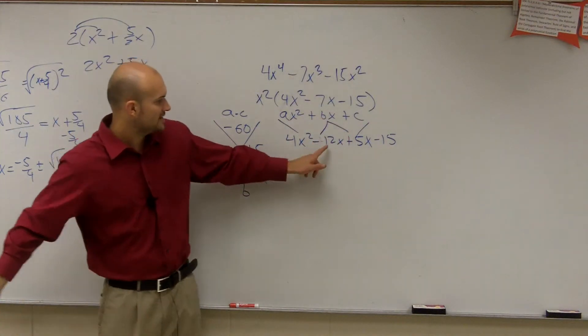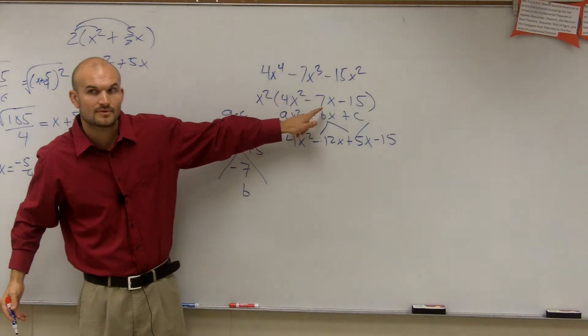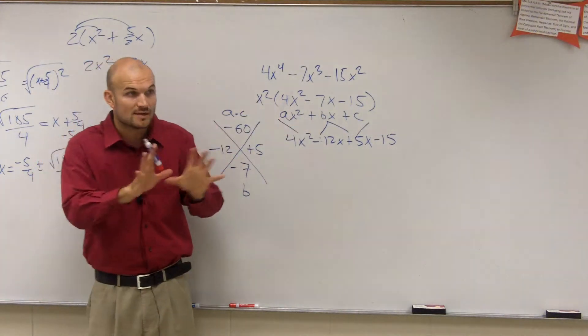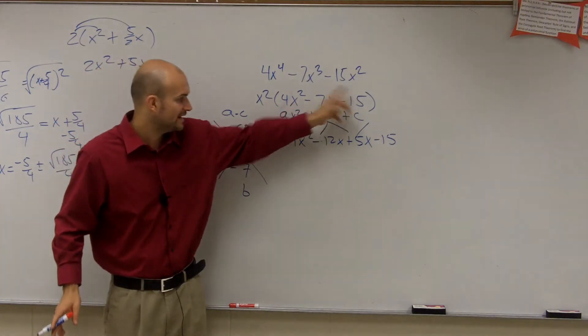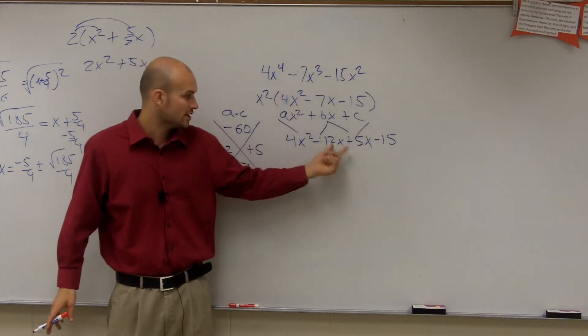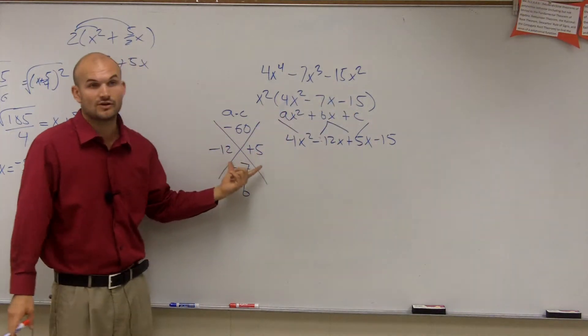So what I did was I took those two factors, and I rewrote them in for the 7x. Do you guys see how negative 12x and 5x give you the negative 7x? All I'm doing is I'm rewriting the problem. So I took it from here, and I rewrote the middle term with our two new terms that we figured out.